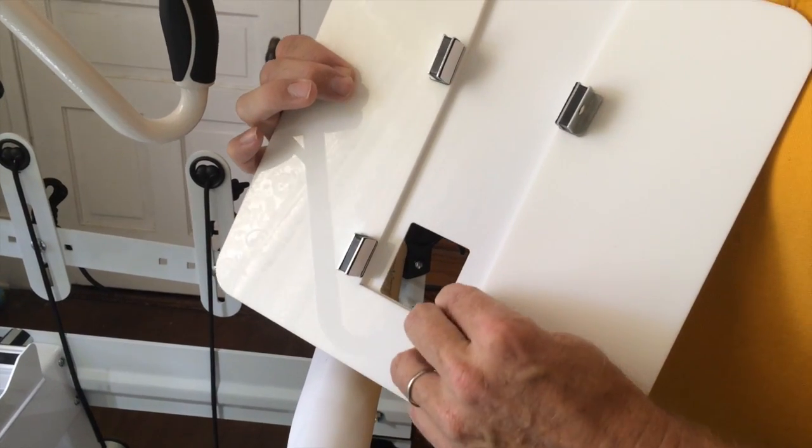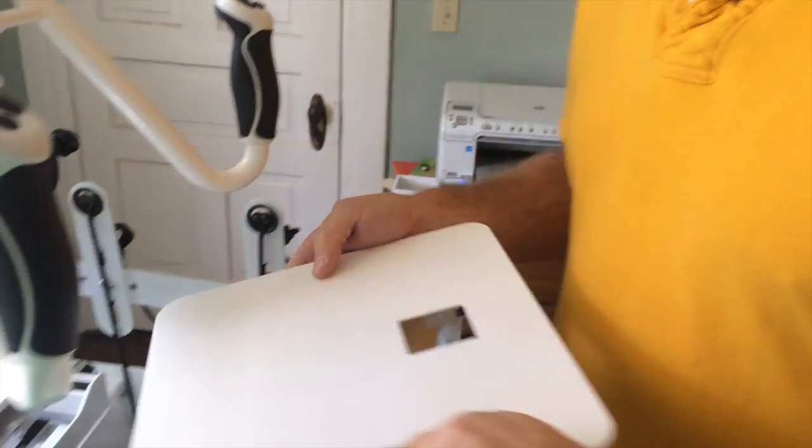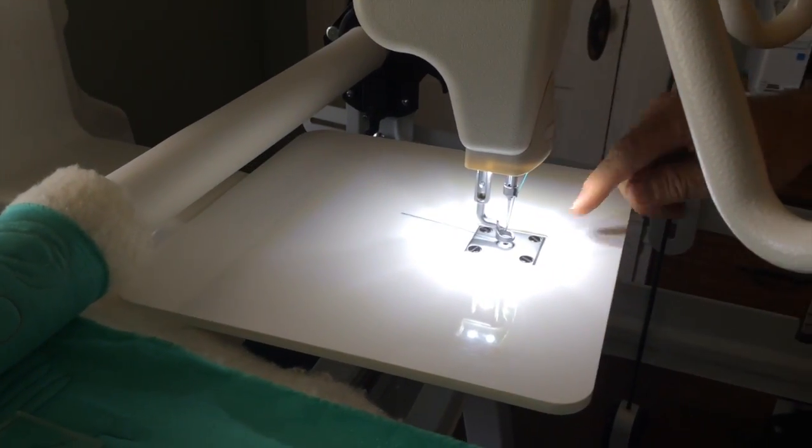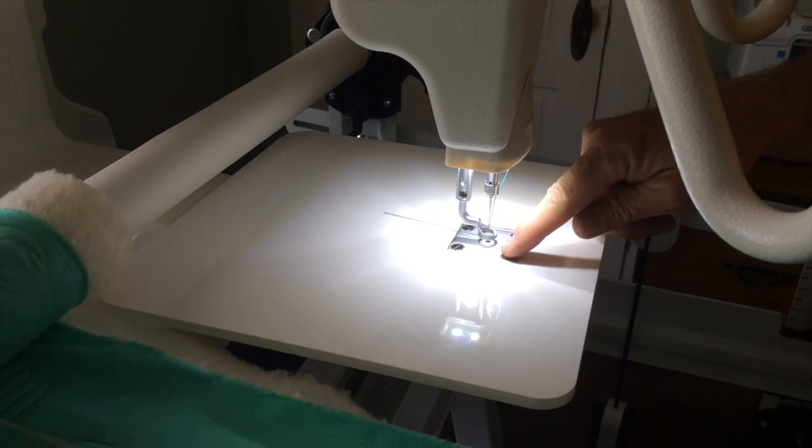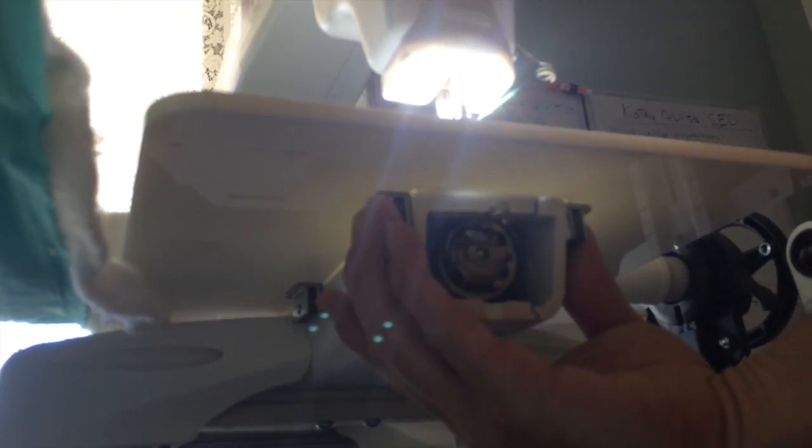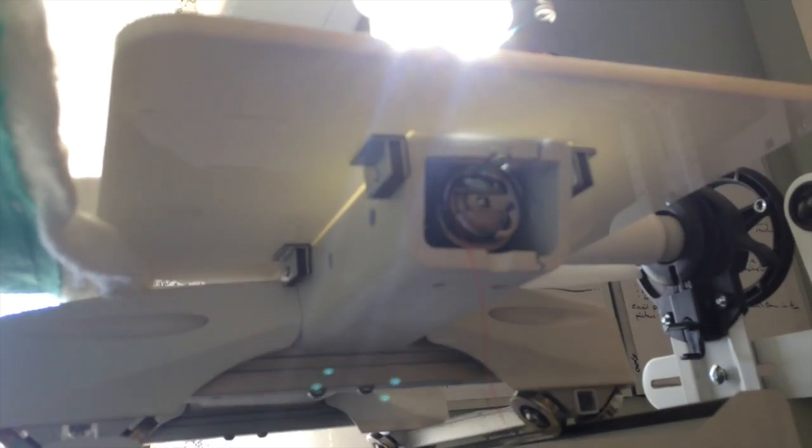So peel off the backing and slide it onto your Block Rocket so you can see the needle plate. And then underneath you will push the magnets up against the side of your Block Rocket. The magnets will stay there and your ruler base will now be ready to use.